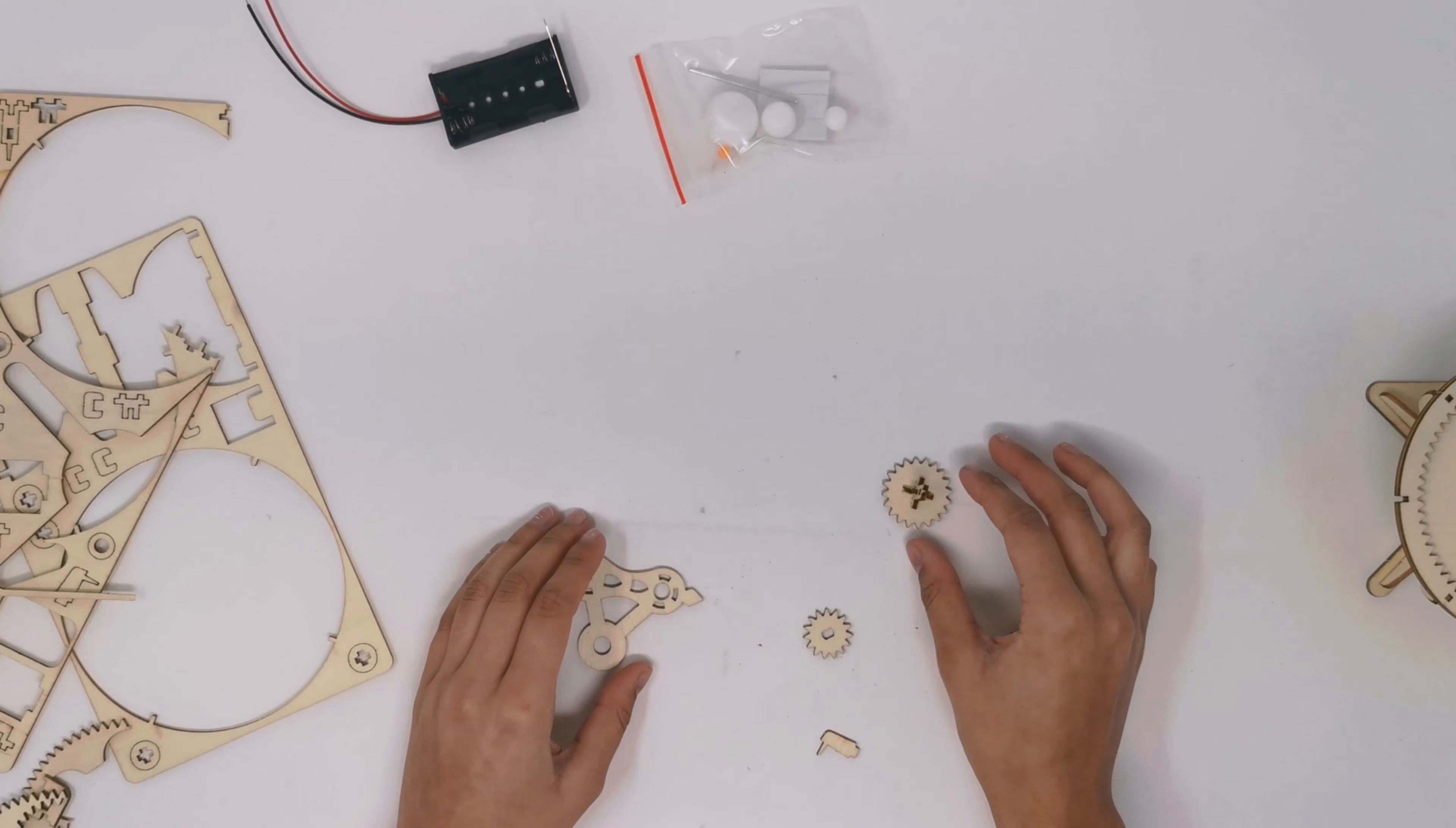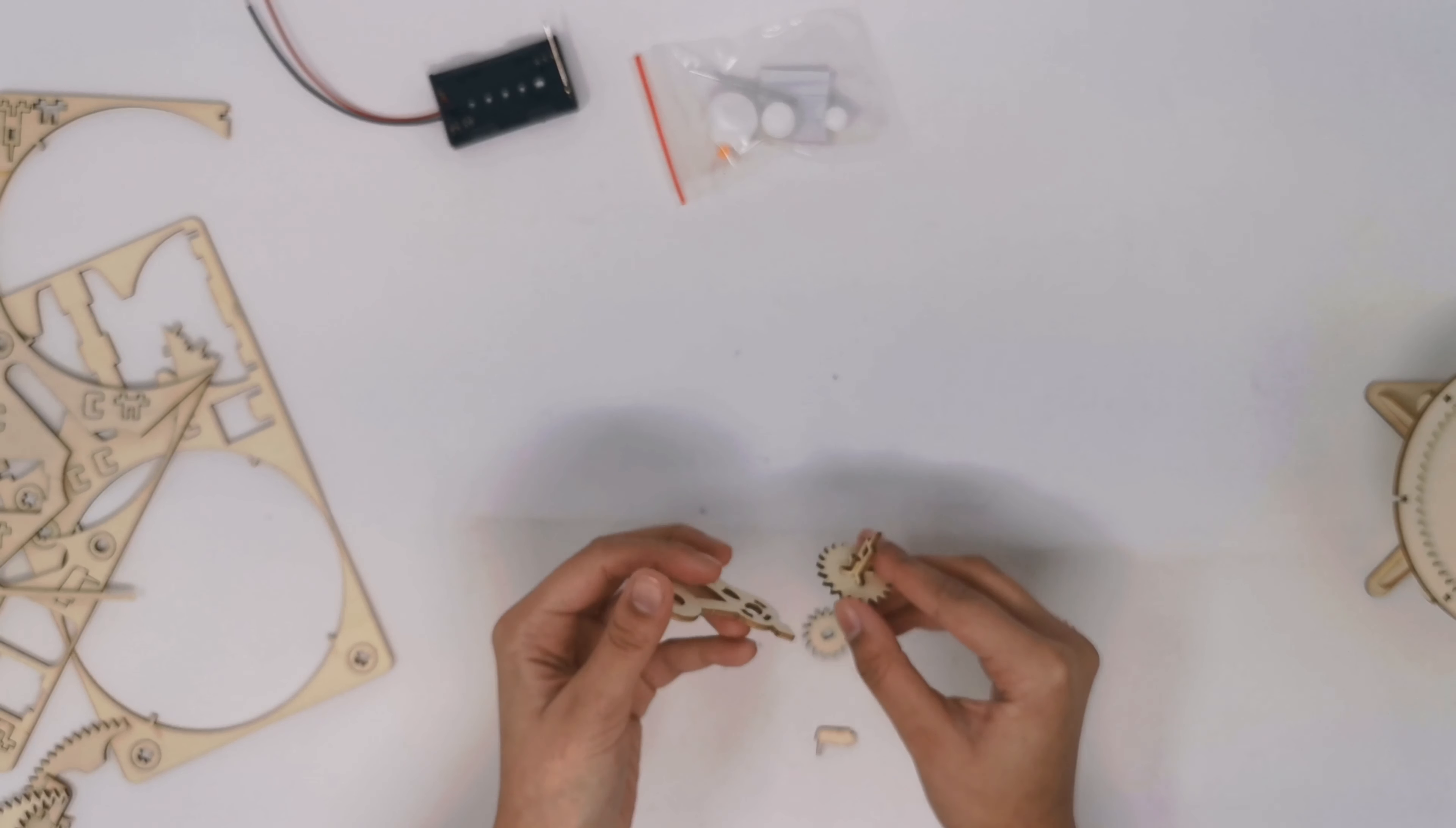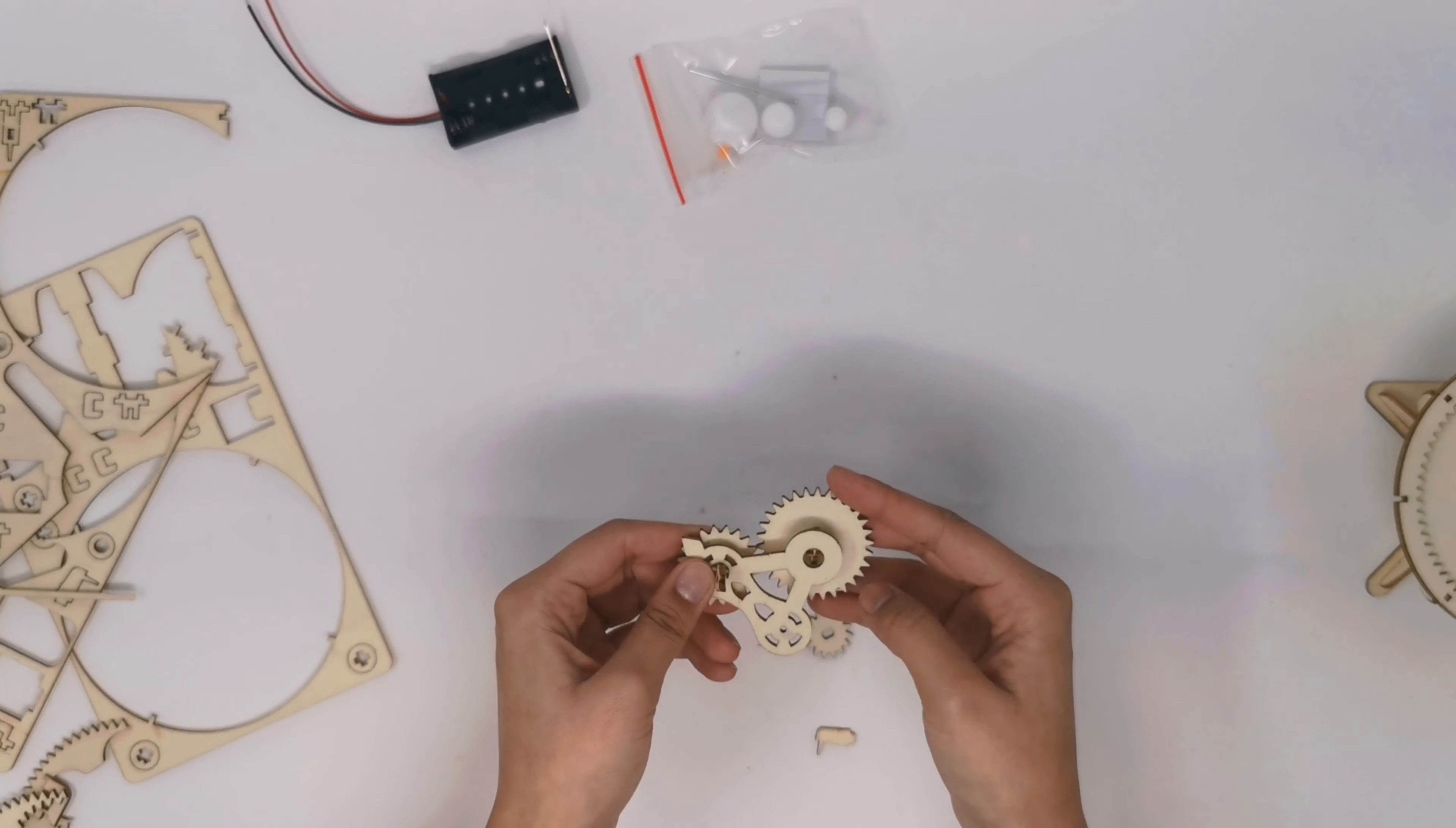Once that is finished, you want to take your component that looks like a triangle and has three places for the gears to go, and put the one with the prong on the other side and along with the bigger gear as shown.